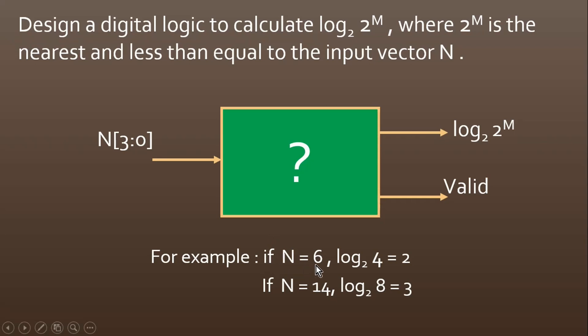Let us take an example. If N equals 6, then 2^m will be 4, which is nearest and less than 6. So log₂ 4 will equal 2. So 2 will be my final answer. Let us consider another example. If N equals 14, then the nearest value which is 2^m will be 8. So log₂ 8 equals 3.